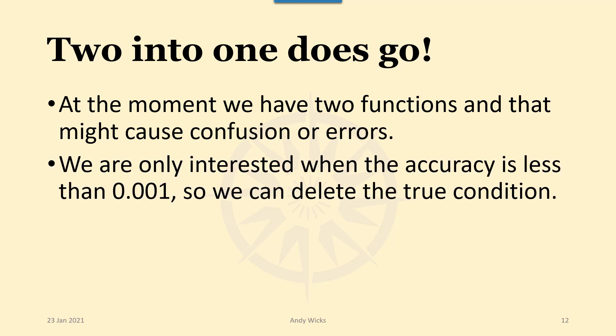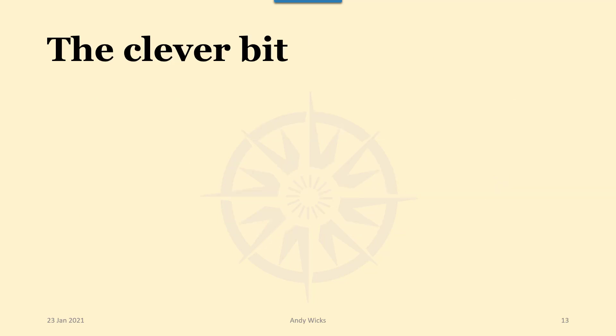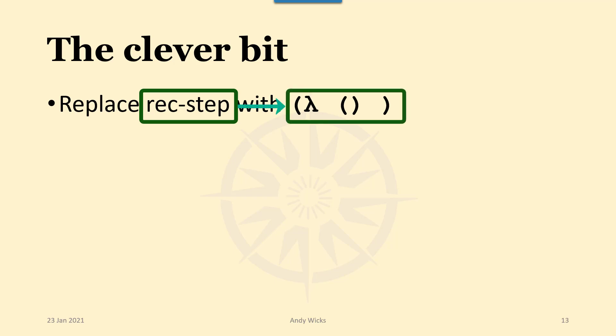We can make it so that we're only interested in when the accuracy is less than say 0.001 and we can delete then that true condition. That leaves us with the line that calls nr again. And that is going to be the clever bit. Let me show you what I mean. What we do is we replace the word rec-step in the function nr with exactly this.